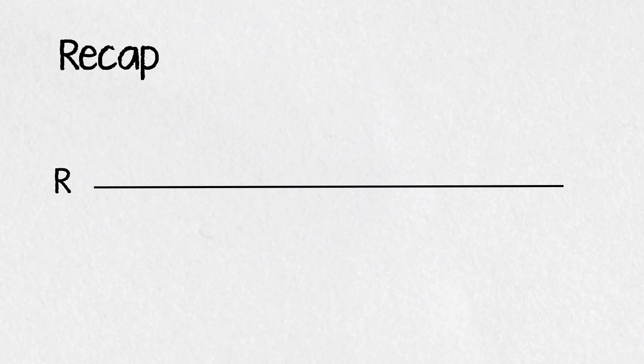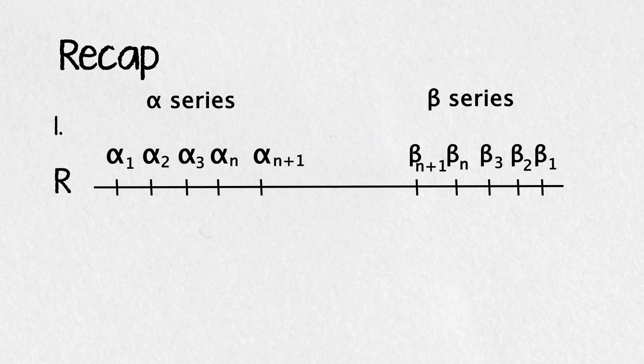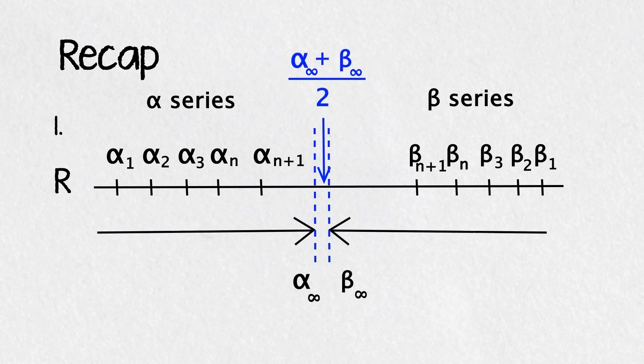So just to recap what we've done, there are three critical cases we analyzed to show that the argument works. Case 1, the alpha series and the beta series don't converge to the same limit, but this means we're missing any real number in between the alpha and beta limit, so in this case the list is missing reals.